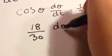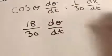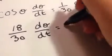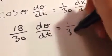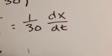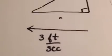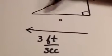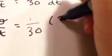So cosine theta equals 18 over 30, and you still have dθ/dt. We still have 1/30 on the right side, and we know dx/dt equals 3 feet per second, because 3 feet per second is how fast x is changing with respect to time.